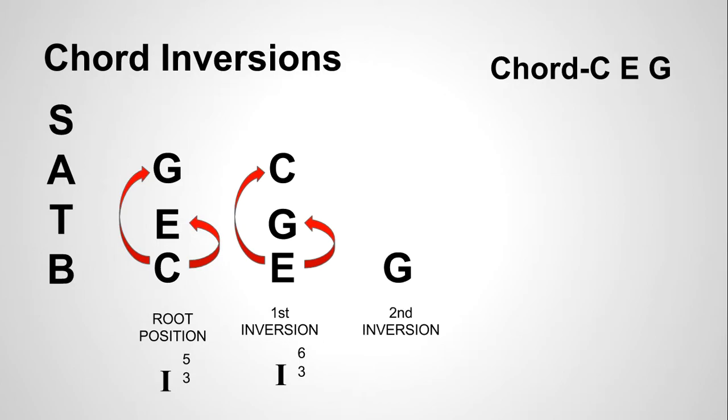Now, let's look at our second inversion chord: G, C, and E. G is in the bass, so that's the bottom note, and we have our I chord again. What is the interval distance between G to C going up, C above G? It's a fourth.